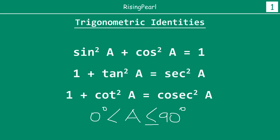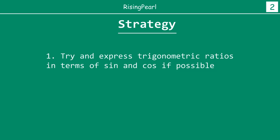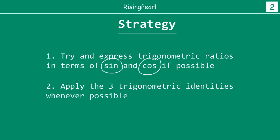Now this is something we have already looked at in the last two webisodes. So today we are going to talk about how we solve questions. The strategy will be: first, try to express the trigonometric ratios in terms of sine and cos if possible, because it is much easier to work with ratios in that form. And finally, whenever we get a chance, we are going to apply the three trigonometric identities that we just saw.